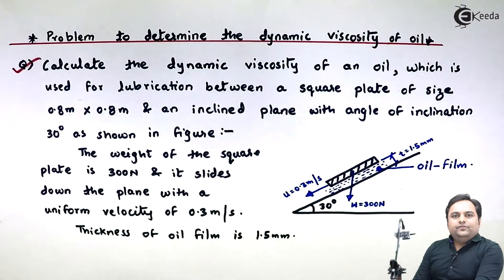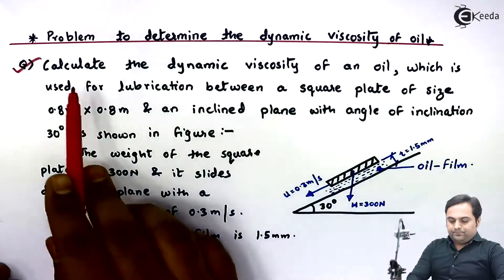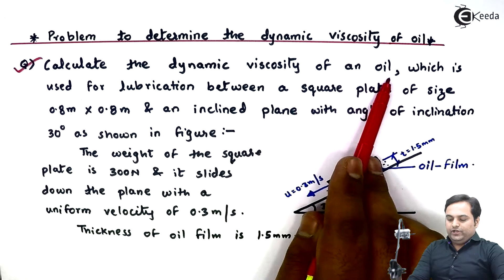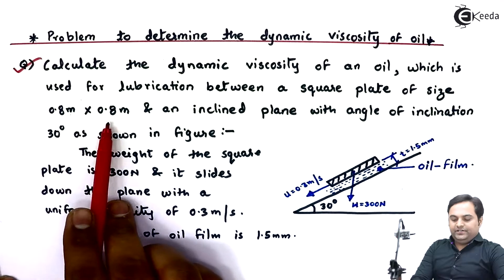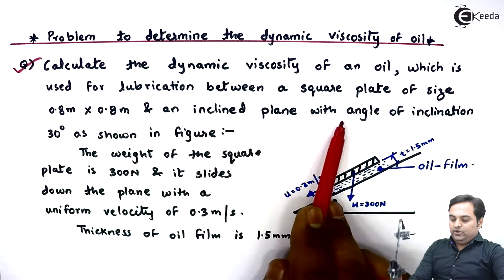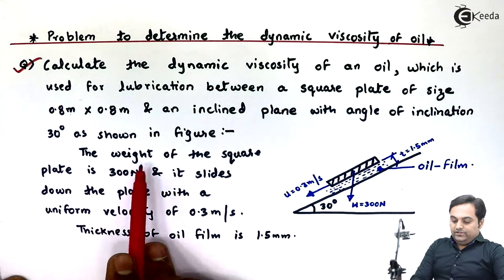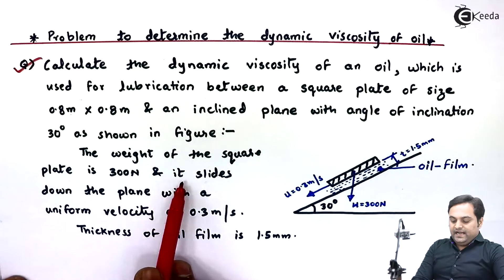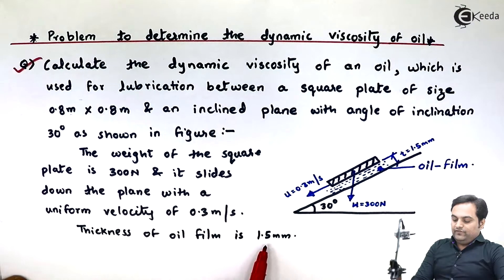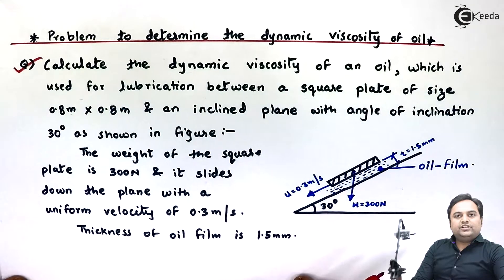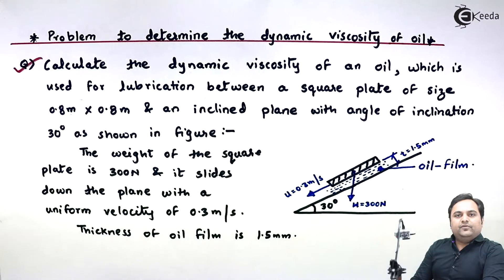In this video we will see a problem related to dynamic viscosity of oil. The question: calculate the dynamic viscosity of an oil used for lubrication between a square plate of size 0.8 m × 0.8 m and an inclined plane with angle of inclination 30°. The weight of the square plate is 300 N and it slides down the plane with a uniform velocity of 0.3 m/s. The thickness of the oil film is 1.5 mm.